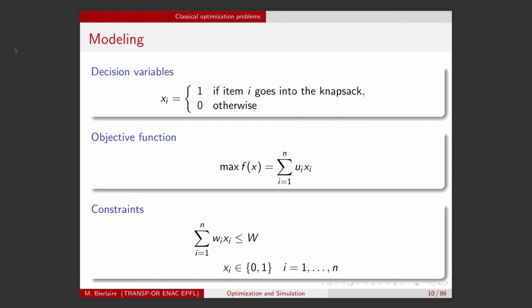Let's try to write it as a mathematical model. When you do optimization, there is a first stage called modeling. Modeling is transforming your optimization problem into a mathematical formulation, and it involves three steps: defining the decision variables, defining the objective function, and defining the constraints.